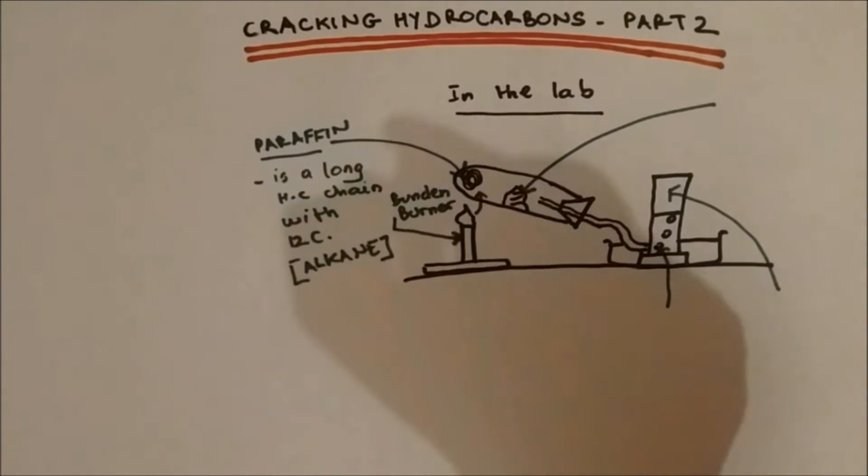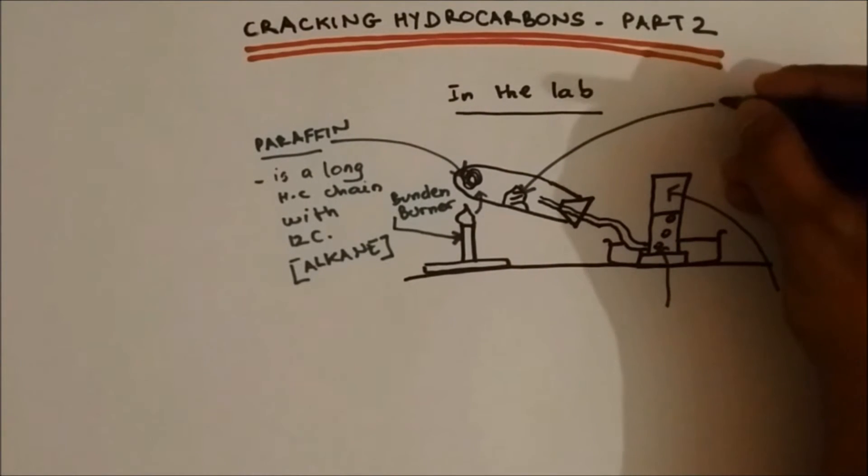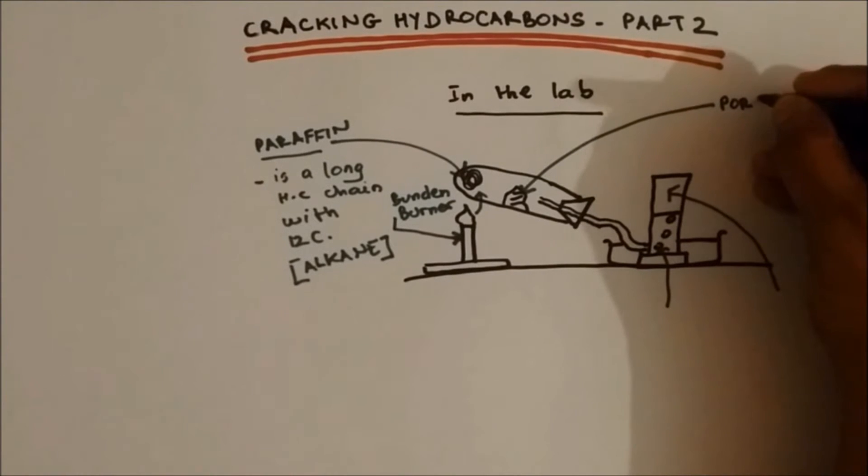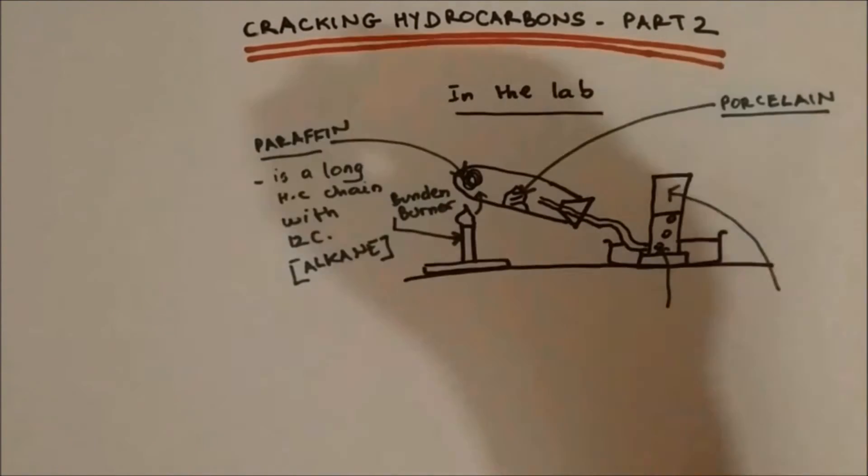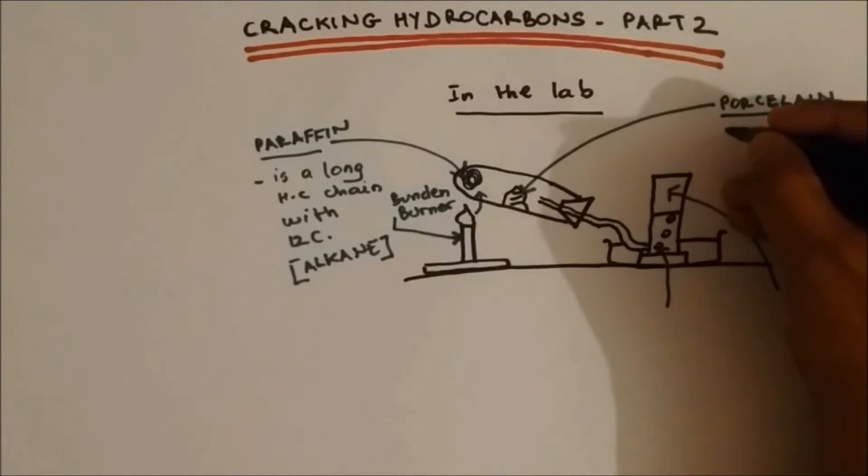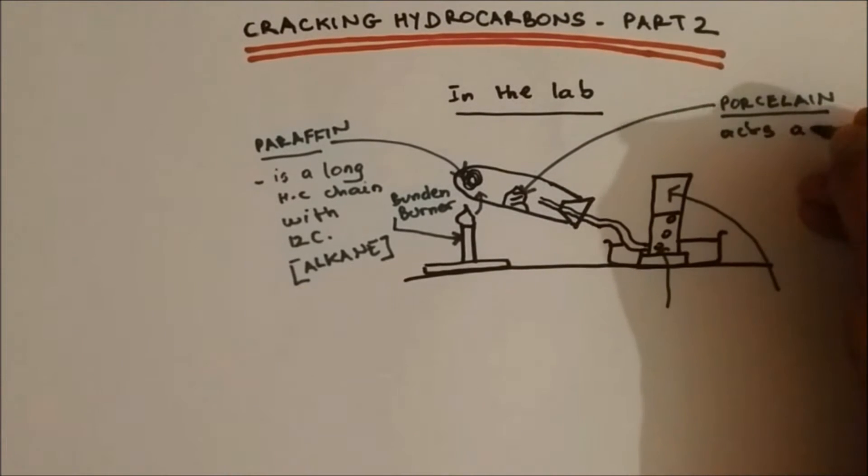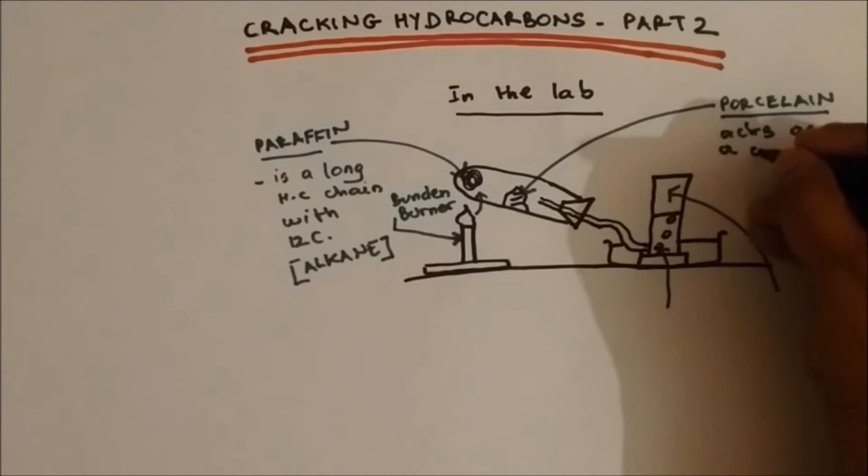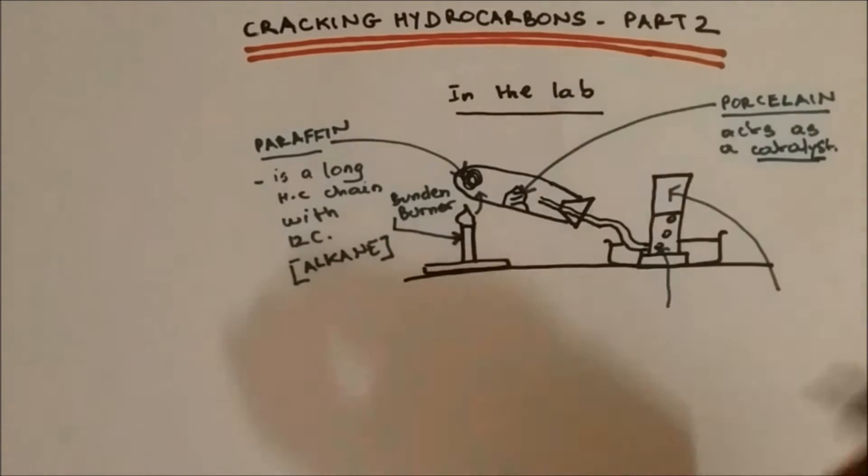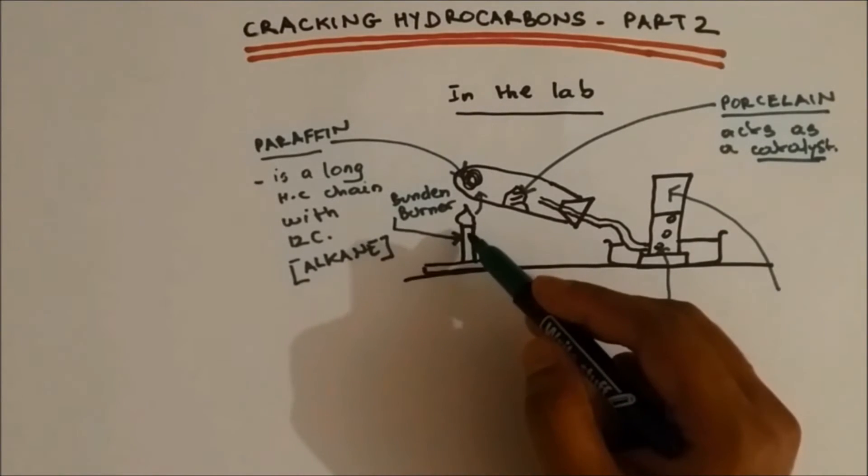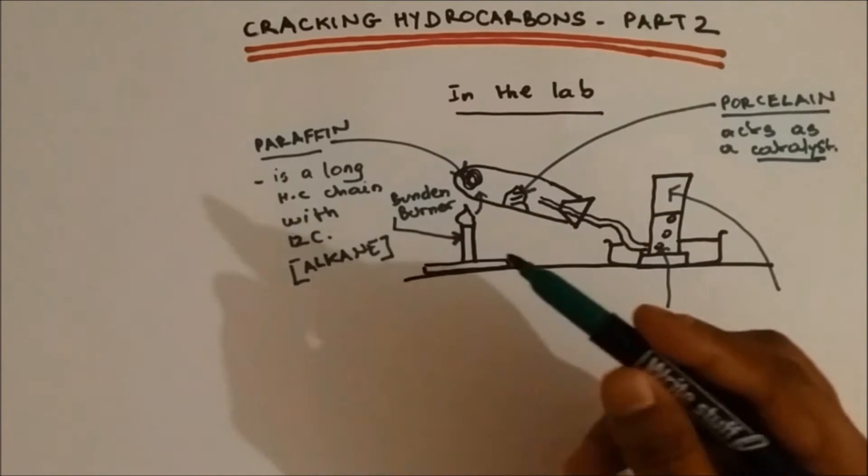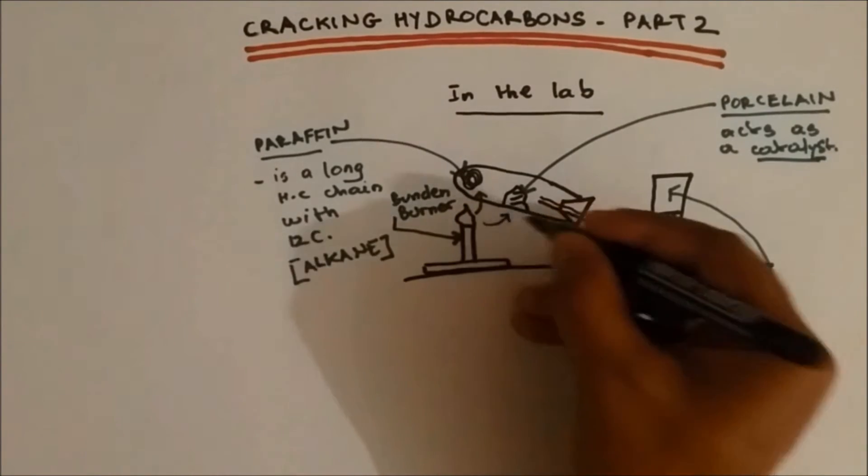The substance over here is called porcelain. Now porcelain acts as a catalyst. What's the function of a catalyst? A catalyst speeds up a chemical reaction without getting used up. The Bunsen burner not only heats the paraffin but it's also used to heat the porcelain.